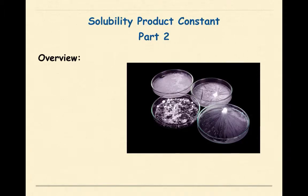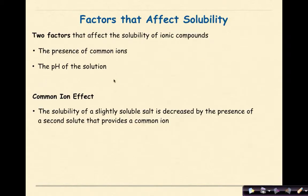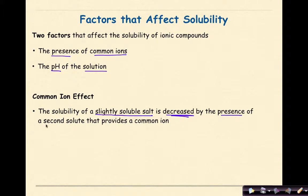Welcome to part two of the solubility product constant. In this tutorial, we're going to look at the common ion effect and solubility and pH — factors that affect solubility. Two factors that affect the solubility of ionic compounds are the presence of common ions and the pH of the solution. The solubility of a slightly soluble salt will decrease by the presence of a second solute that provides a common ion.